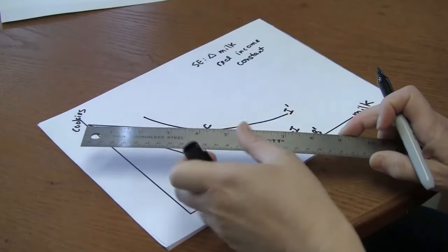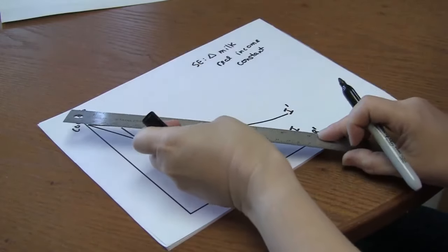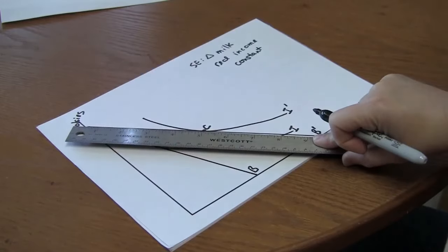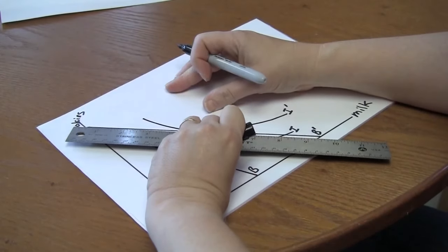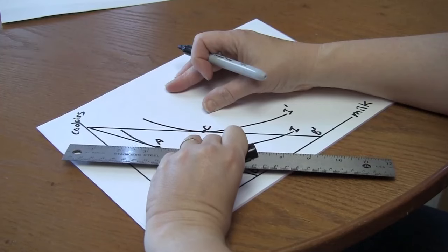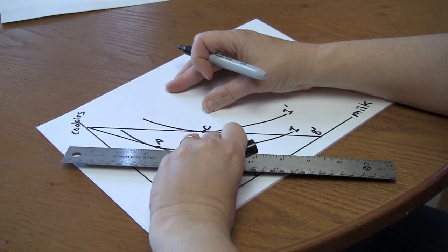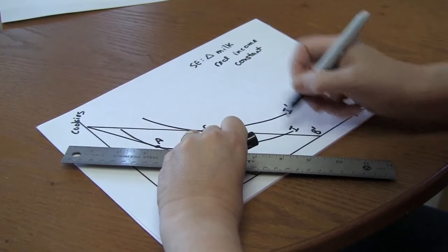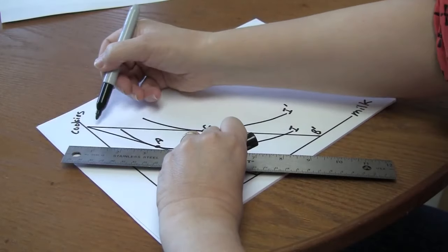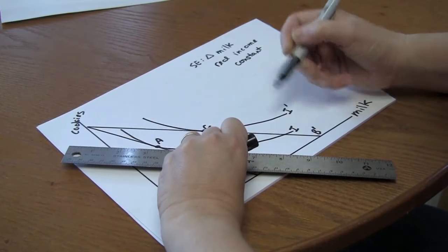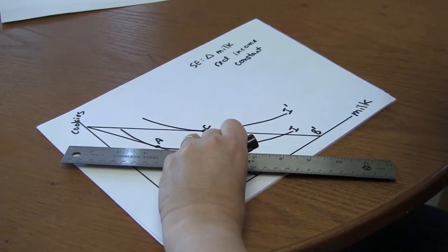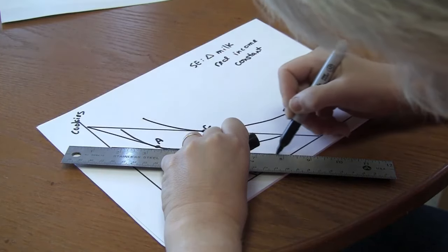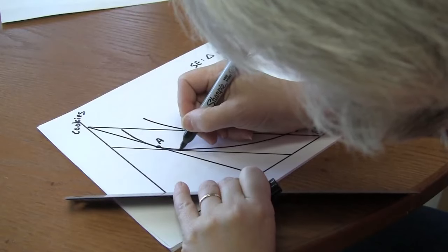So to do that, I want to take the new prices, the new lower price ratio and then pull back until I'm on my original indifference curve. Something like that. The important thing is parallel to the new budget line just tangent to the original indifference curve.